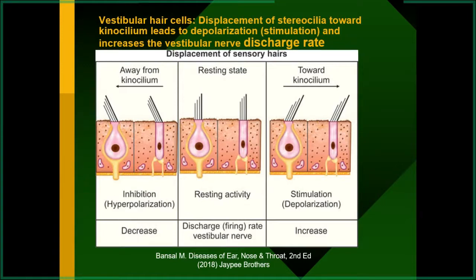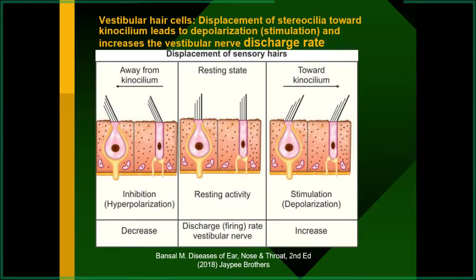In cases of acoustic neuroma, inhibition occurs and the patient again feels imbalance and unsteadiness. If both sides of the labyrinth are dead and not working, the patient will not feel any vertigo. Even if a fistula is present and you perform the fistula test, there will be no vertigo or giddiness; no eye movement will be seen. No disturbance will be there at all.